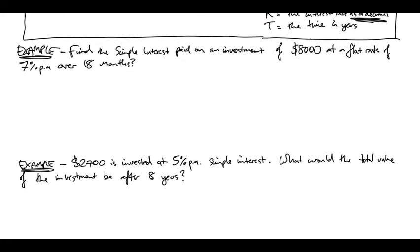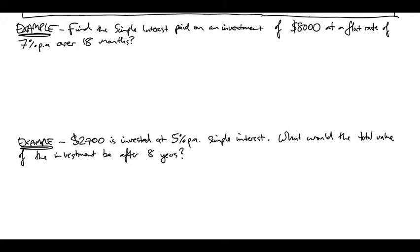So let's do a couple of examples here. Let's get my calculator on the phone ready to go. Alright, so find the simple interest paid on an investment of $8,000 at a flat rate of 7% over 18 months.